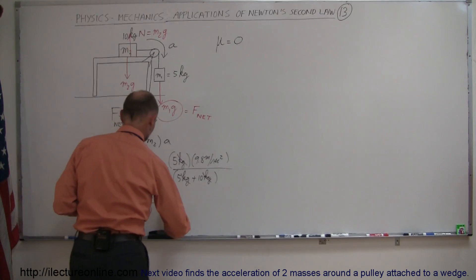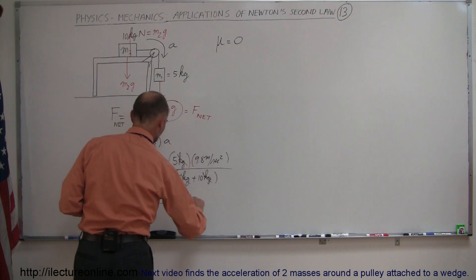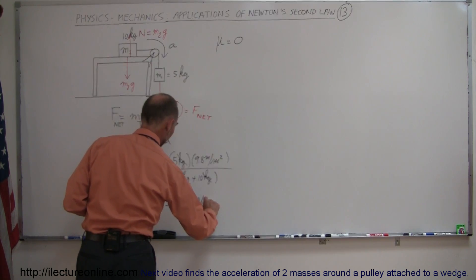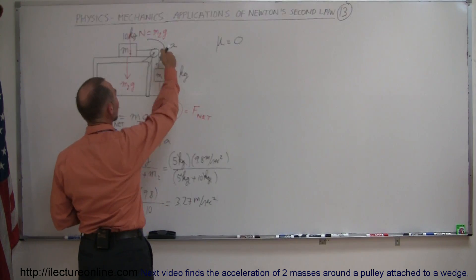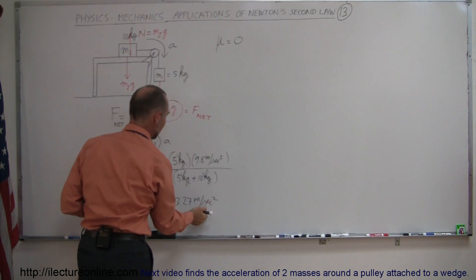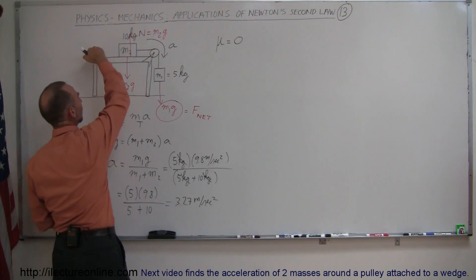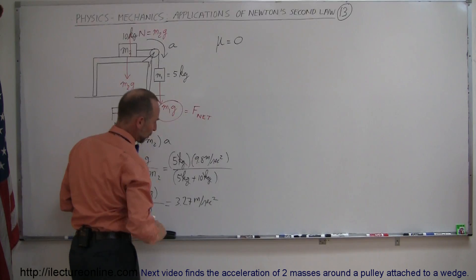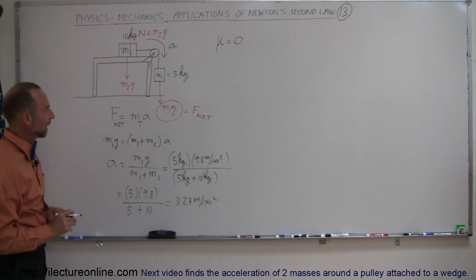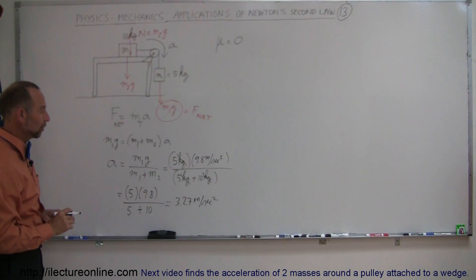And so this system will accelerate at 3.27 meters per second squared. Notice that this mass will accelerate downward at 3.27 meters per second squared, and this mass will accelerate across the table at 3.27 meters per second squared. And that's how you do a problem like that, using Newton's laws.